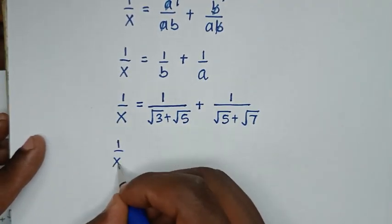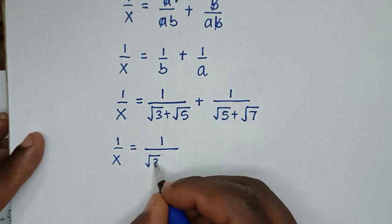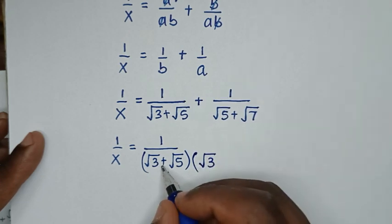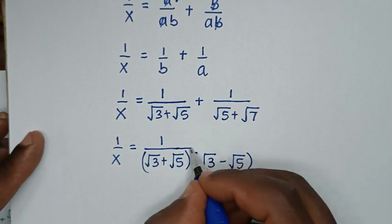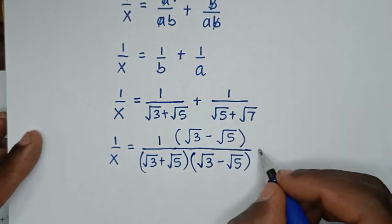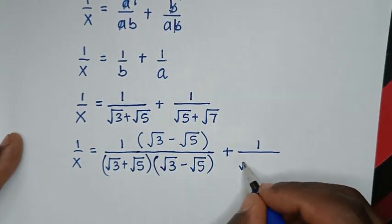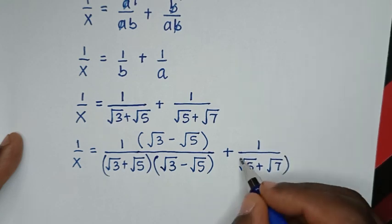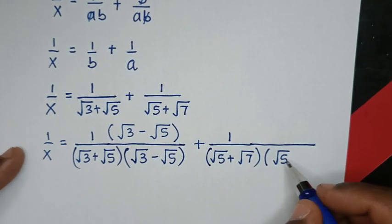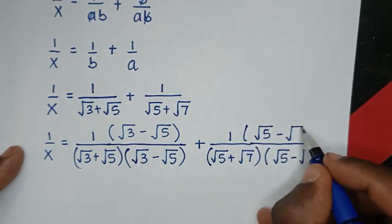Then 1/x equals — to rationalize the denominator: 1/(√3 + √5) multiplied by (√3 − √5)/(√3 − √5), plus 1/(√5 + √7) multiplied by (√5 − √7)/(√5 − √7).